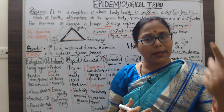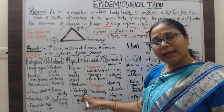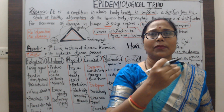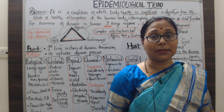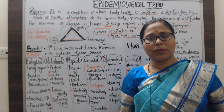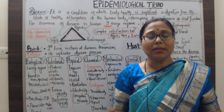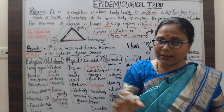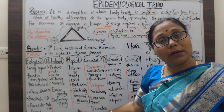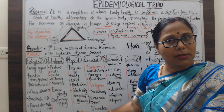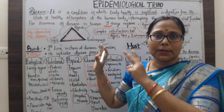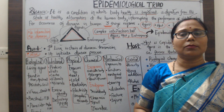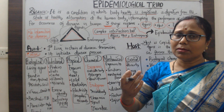The third category is physical agents — exposure to heat, radiation, cold, and electricity. For example, someone working in a coal mine, cotton industry, or mining factory is exposed to these physical conditions daily, and disease may arise. This falls under the occupational hazard section. These physical agents put a person into a disease condition.